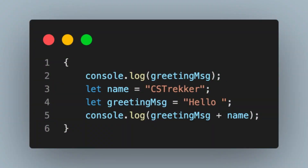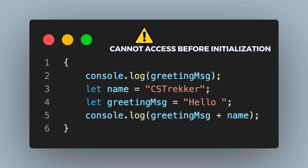Let us tweak our program a little bit. After the console.log statement, we declare another variable and call it just name. Then we declare the greetingMessage and initialize it with a simple text message. And finally, we log the greetingMessage along with the name variable — just a basic concatenation. This time again, we get an error, and that too on the very first line of the program. But this time, there is a difference. The error message says: cannot access the variable greetingMessage before initialization.